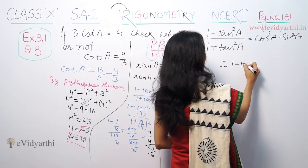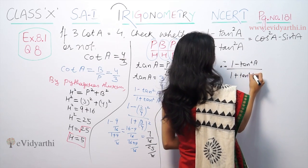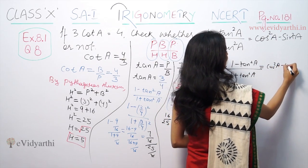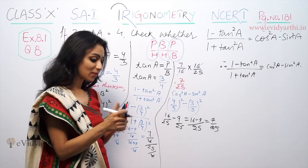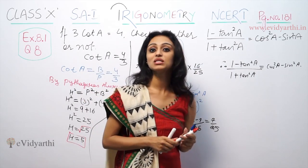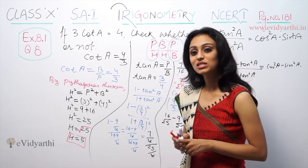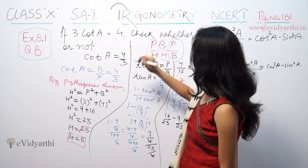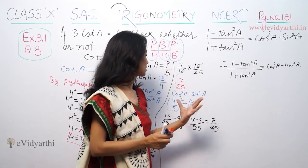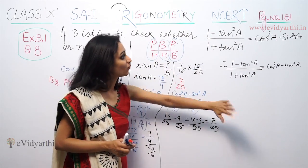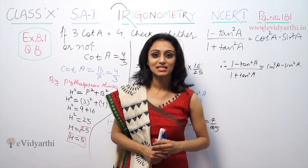Therefore, 1 minus tan square A upon 1 plus tan square A equals cos square A minus sin square A. First we found all the values - base, perpendicular, and hypotenuse using Pythagoras theorem. Then we found tan value, substituted it in the formula, then found cos and sin values, substituted them, and checked that LHS equals RHS. This was question of exercise 8.1.